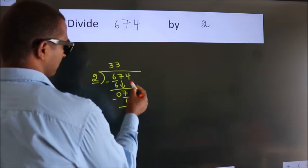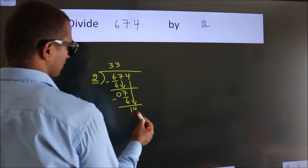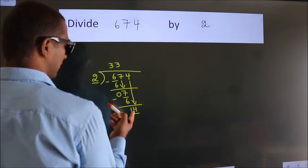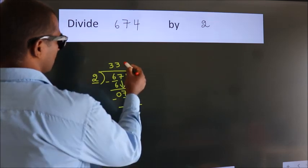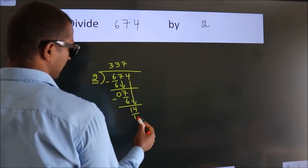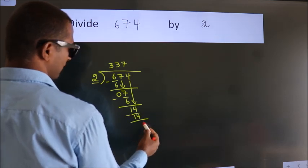After this, bring down the beside number. So 4 down. So 14. When do we get 14 in the 2 table? 2 times 7 is 14. Now we subtract and we get 0.